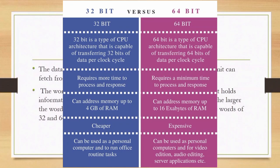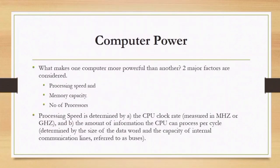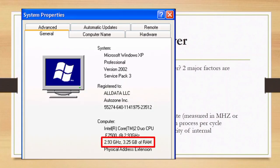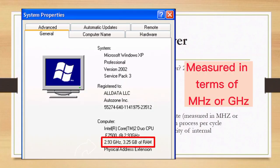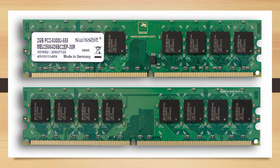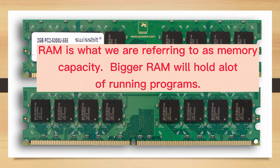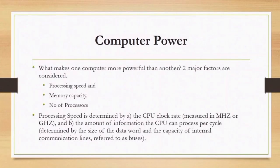How do we measure computer power? There are three major factors: processing speed, memory capacity, and number of processors.